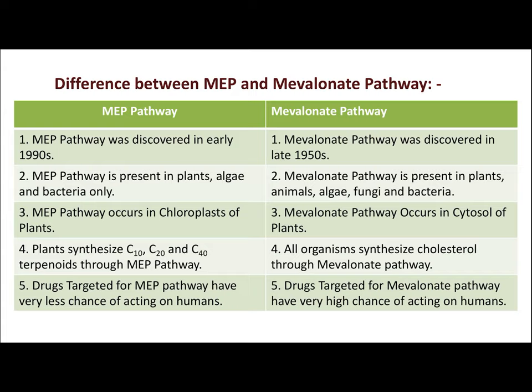The mevalonate pathway is present in plants, animals, algae, fungi, and bacteria — almost all organisms except viruses. The MEP pathway occurs in the chloroplast of plants, while the mevalonate pathway occurs in the cytosol. From the MEP pathway, plants synthesize C10 monoterpenoids, C20 diterpenoids, and C40 tetraterpenoids. From the mevalonate pathway, C30 derivatives are especially produced, from which cholesterol is derived, along with some C15 derivatives.